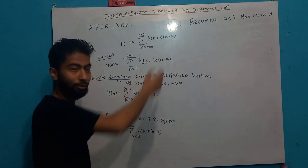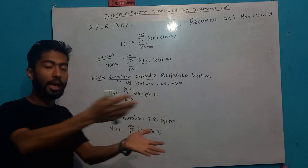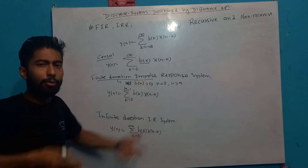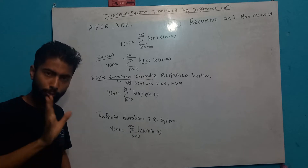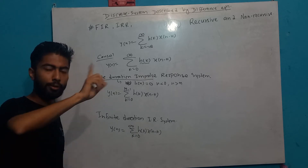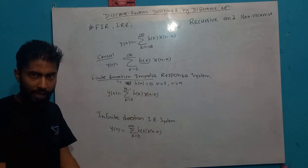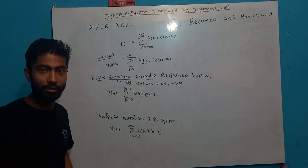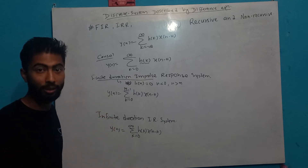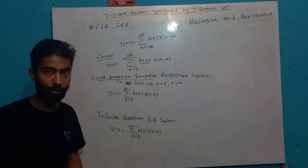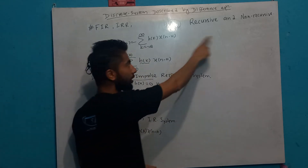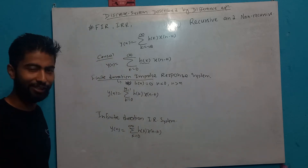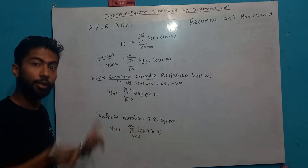So we implement the difference equation using the infinite duration IIR system. We have to understand the LCCD equation. Now we need to know the recursive or non-recursive concept — this is how FIR and IIR relate, and why we implement the LCCD equation for the IIR system. How can we get the recursive version?